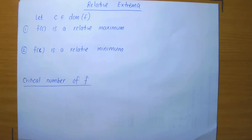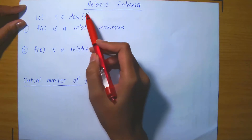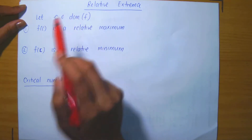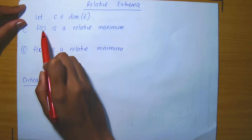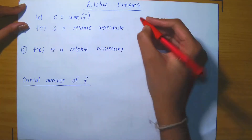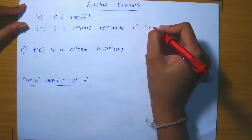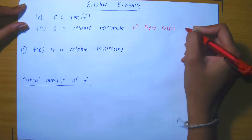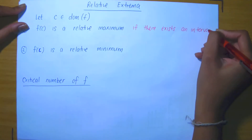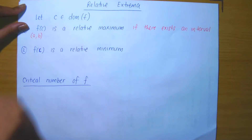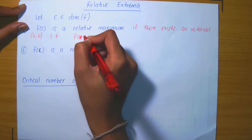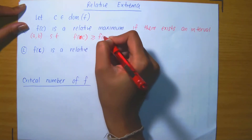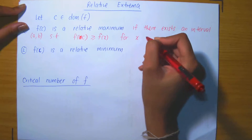Today I'm going to be discussing relative extrema and the first derivative test. Let's suppose that we had some function f and I had picked some number c in the domain of the function. Then we say that f of c is a relative maximum — also referred to as a local maximum — if there exists an open interval of the form (a, b) such that f of c is greater than or equal to f of x for all x in that interval.